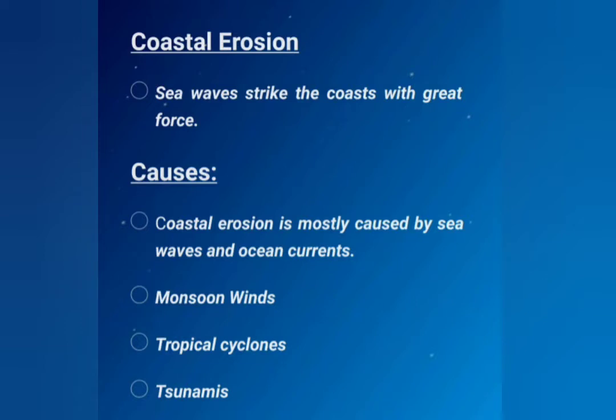What are the causes for coastal erosion? There are many causes. Coastal erosion is mostly caused by sea waves and ocean currents. The main causes are the monsoon winds, tropical cyclones, and tsunami. These are the causes for coastal erosion.